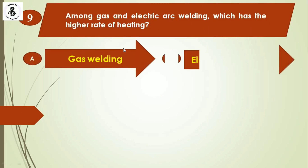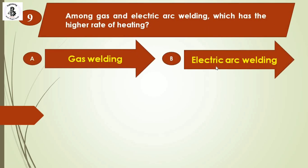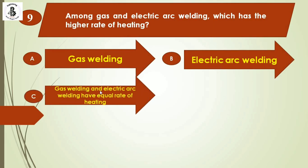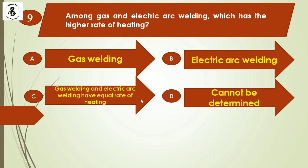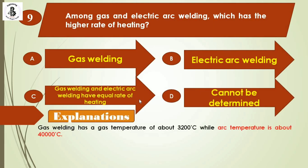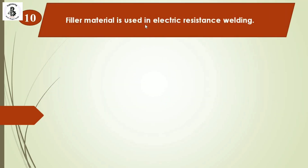Question 9: Among gas and electric arc welding, which has the higher rate of heating? Option A: gas welding, option B: electric arc welding, option C: equal rate, option D: cannot be determined. In gas welding, the temperature is about 3,200°C, while in electric arc welding the temperature reaches around 40,000°C. The right answer is option B: electric arc welding has a higher rate of heating.